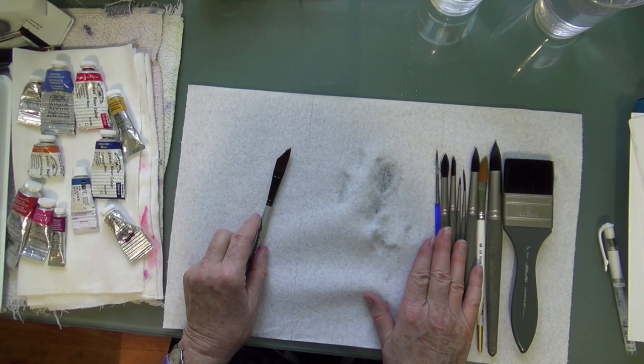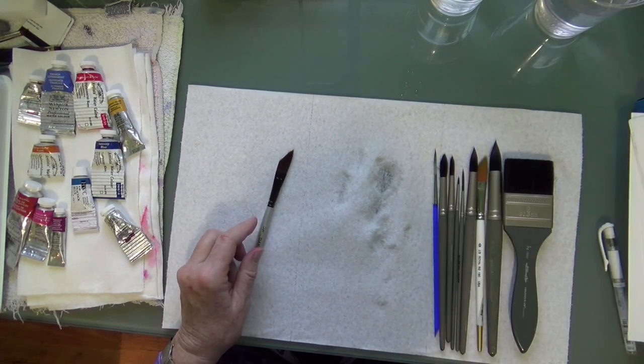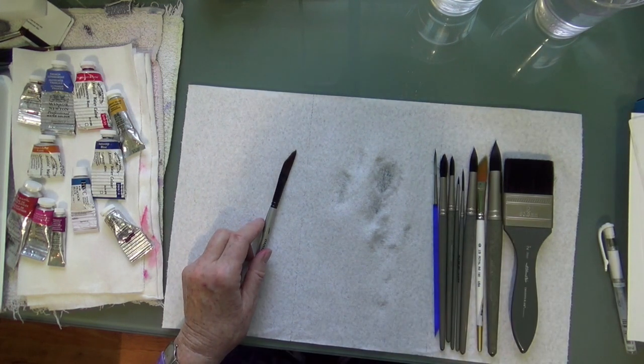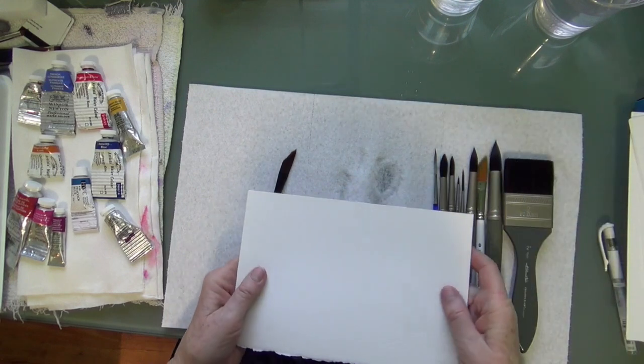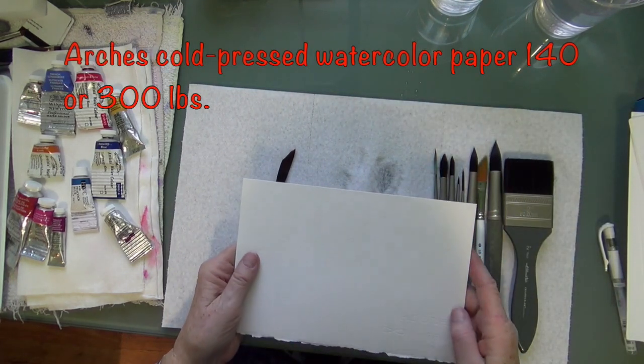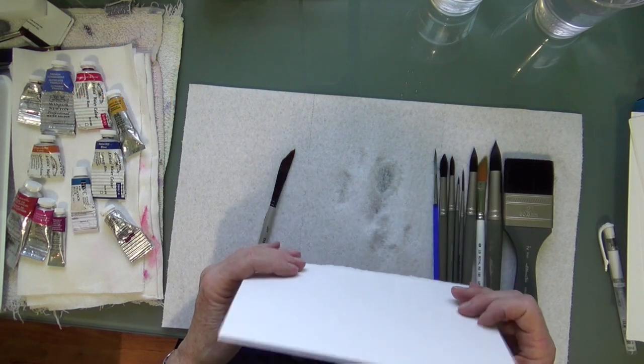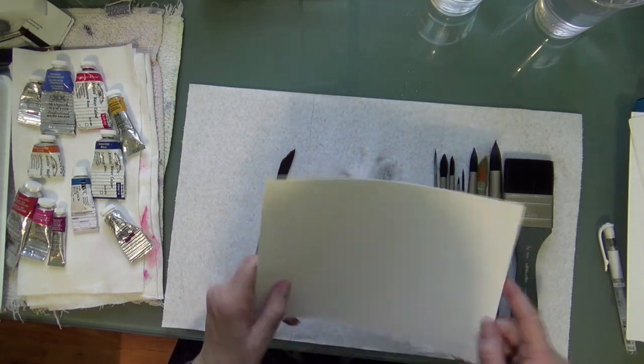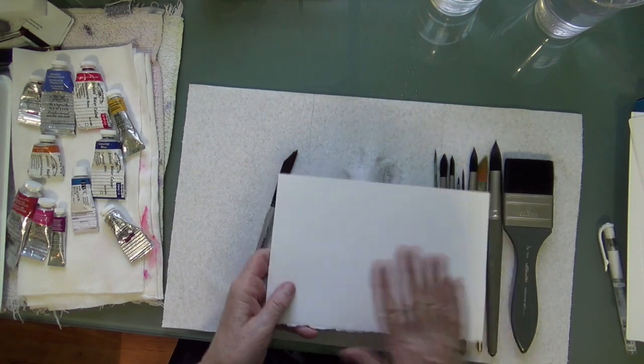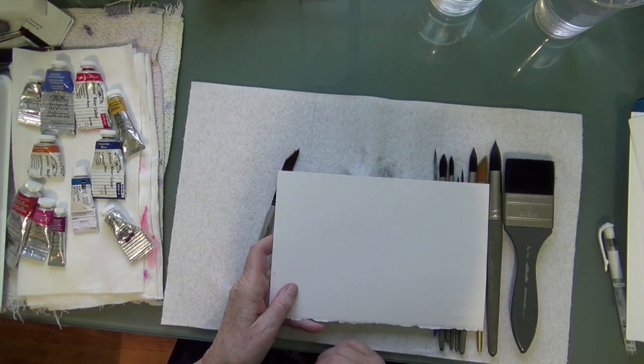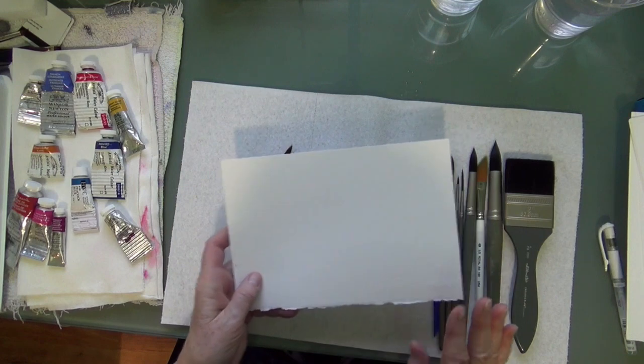So there's the brushes I use and then let's get to the paper. I like to use Arches cold pressed watercolor paper. It's made from 100% cotton rag and this sheet here is 140 pounds, so that's going to buckle a little bit on you. But if you're just starting out, it'll do just fine.